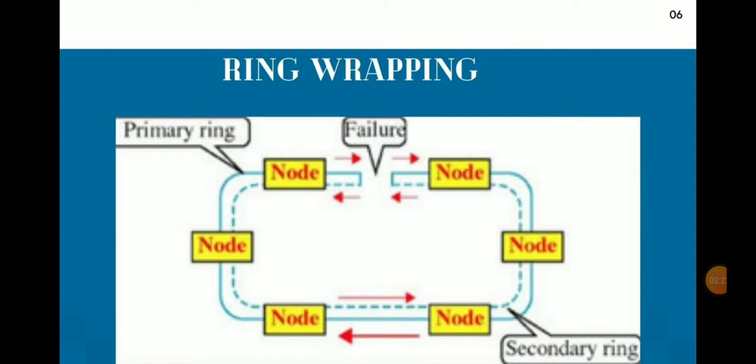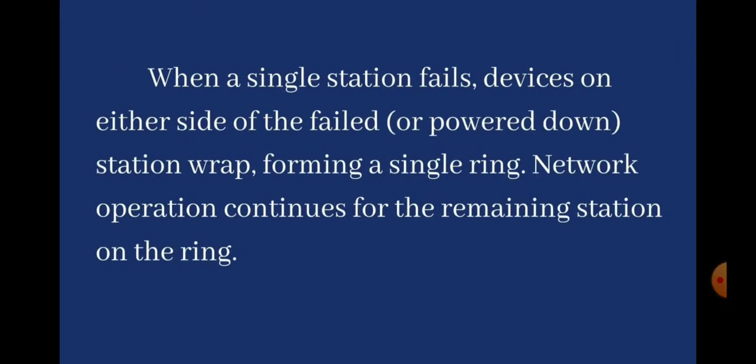The primary ring carries data between systems, while the secondary ring is used for redundancy. If the network experiences any interruption in the primary ring, the secondary ring is used until the primary is recovered. When a single station fails, devices on either side of the failed station wrap, forming a single ring, and network operation continues for the remaining stations.